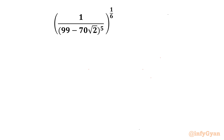Welcome back to Infigyan friends. Today in this video we are going to take up another challenging question from algebraic simplifications. Here we have the expression: 1 over (99 minus 70√2) whole power 5, then whole power 1 over 6. Let's consider the given expression as E and I will showcase two methods to simplify this problem.